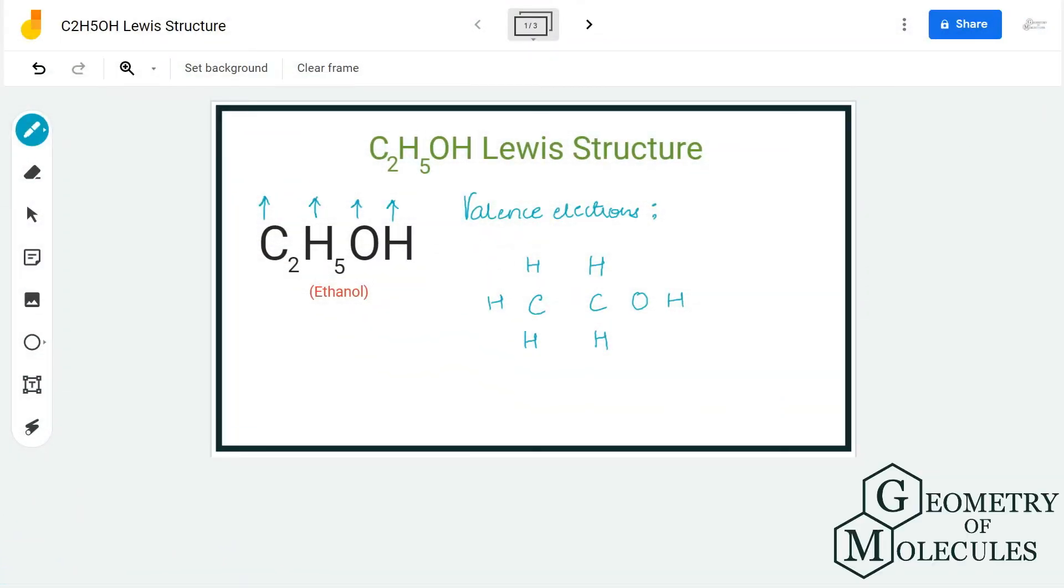Hi guys, today in this video we are going to look at the Lewis structure of C2H5OH or CH3CH2OH. Both are accepted chemical formulas for ethanol. To understand the Lewis structure of this molecule, we are first going to look at the total number of valence electrons and the number of atoms in this molecule.